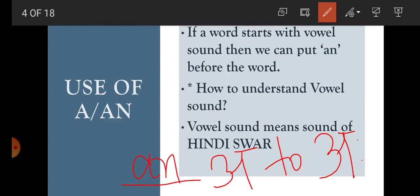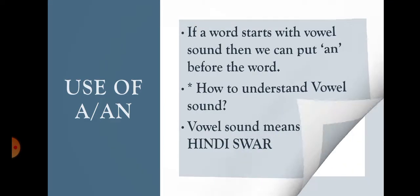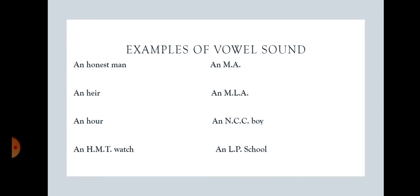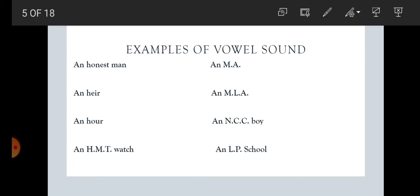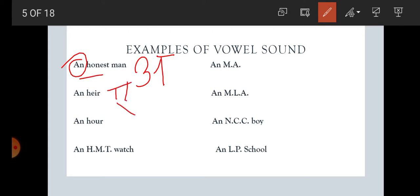There are lots of examples here. Example of vowel sound. Number one: 'an honest man.' The word 'honest' starts with which sound? A — and A is a vowel. So here AN is used. Next: 'an heir.' H-E-I-R. 'Heir' starts with which sound? A. So A is a vowel sound — Hindi swar — and that is why AN is used here.